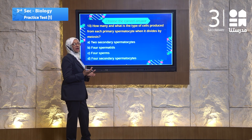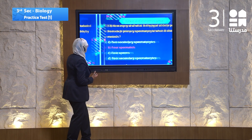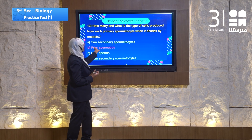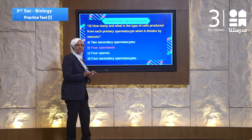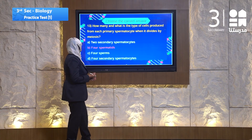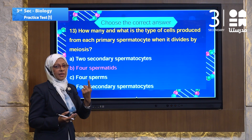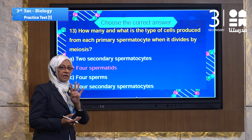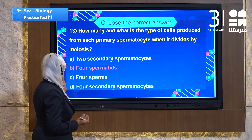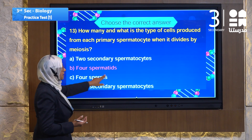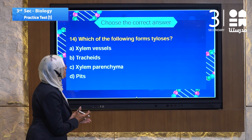The answer must be four spermatids. Why four spermatids? Because the division here is meiosis, so it must produce four cells, each one containing half the number of chromosomes. It will be four spermatids.